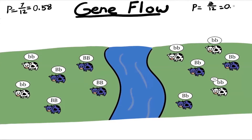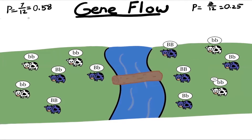Let's say one day a tree falls and creates a bridge over this river, allowing the cows to move back and forth between the populations. We end up with a migration event where two cows from the first population migrate to the second population, and two cows from the second population migrate to the first.